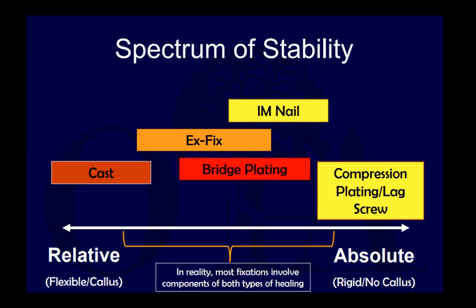A graph shows the spectrum of stability from relative to absolute. Casting provides the most relative stability with no internal fixation. Moving up the spectrum: external fixation, bridge plating, IM nails, compression plating, and lag screws — all the way to absolute or rigid constructs where, as long as healing occurs normally, you do not see callus formation.